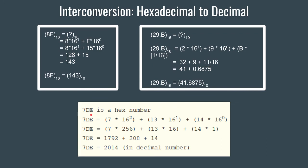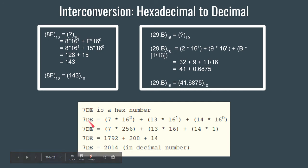Now let's look at 7DE, which is a hexadecimal number. The positional weight of 7 is 2, D is 1, and E is 0. We write: 7 × 16² + 13 × 16¹ + 14 × 16⁰. Computing: 7 × 256 = 1792, plus 13 × 16 = 208, plus 14 × 1 = 14. So 1792 + 208 + 14 = 2014. The decimal equivalent of hexadecimal 7DE is 2014.